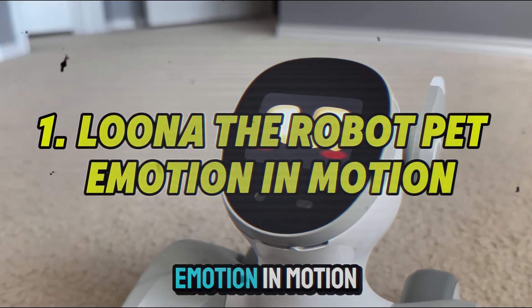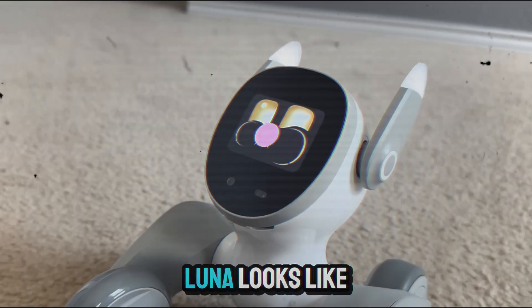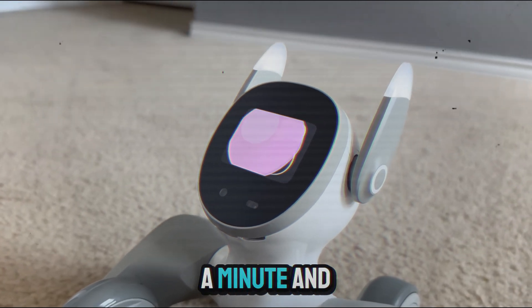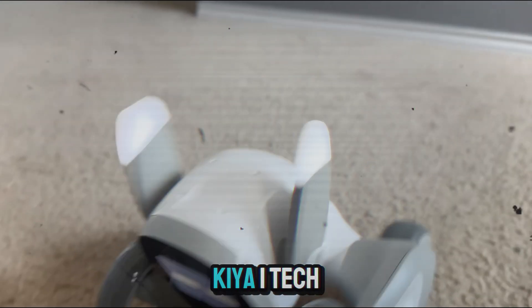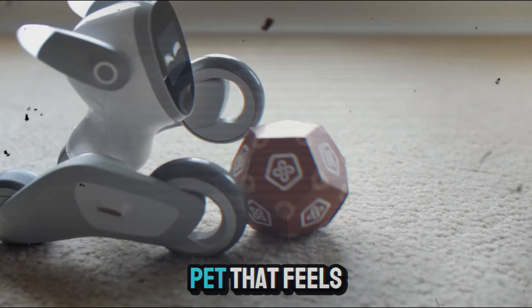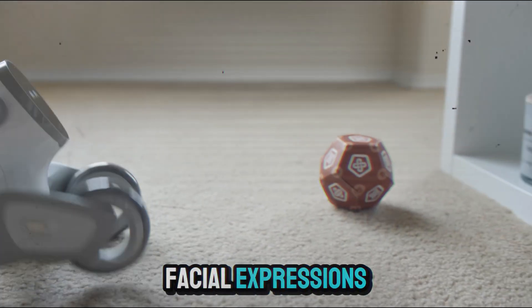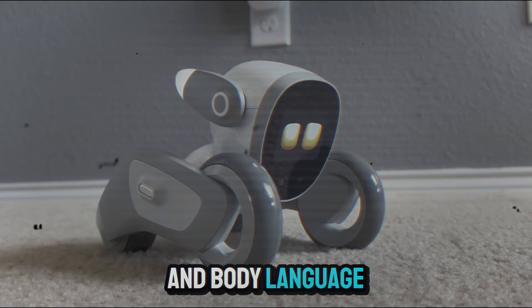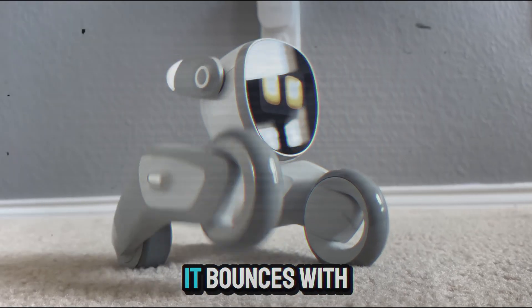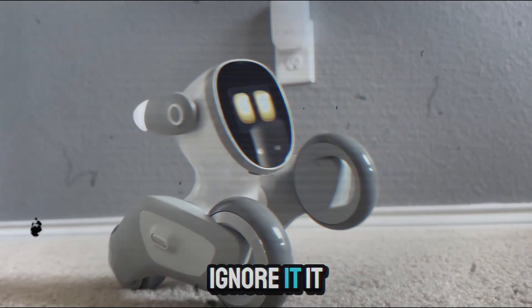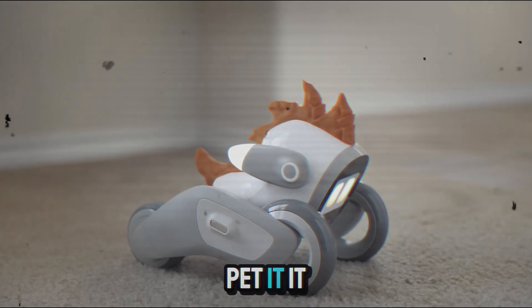1. Luna the Robot Pet. Emotion in motion. At first glance, Luna looks like a toy, but give it a minute and it comes alive. Luna, developed by Kiai Tech, is a robot pet that feels emotionally present. It reads your facial expressions, tone of voice and body language, and reacts accordingly. Smile at it, it bounces with excitement. Ignore it, it sulks. Pet it, it leans in and purrs digitally.